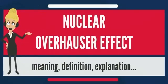The Nuclear Overhauser Effect, NOE, is the transfer of nuclear spin polarization from one spin bath to another spin bath via cross-relaxation. When observed by nuclear magnetic resonance spectroscopy, the technique is used to elucidate the structures of organic compounds.